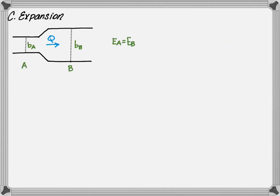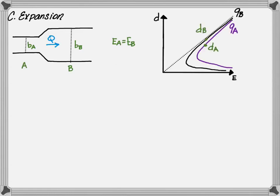An expansion within an open channel occurs when you want to widen a channel. The plan view shows that as flows move from point A through point B within an expansion, there is an increase in width and a decrease in unit discharge. Just like a contraction, the specific energy from point A to point B is constant. A specific energy diagram is shown with depths at point A and B, based on the specific energy that is constant through the expansion.